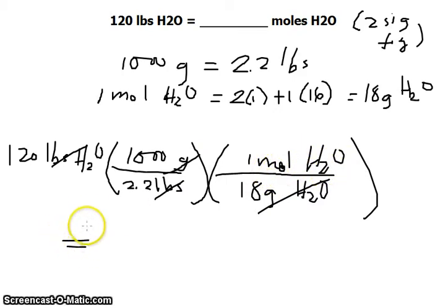And doing the math there, using a calculator, we get 3030 moles of H2O. That's it.